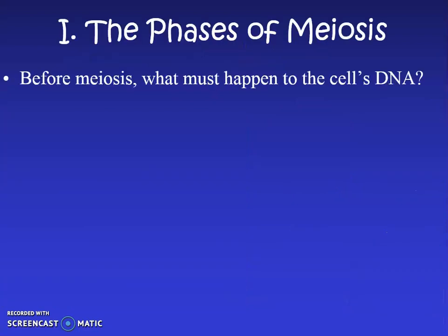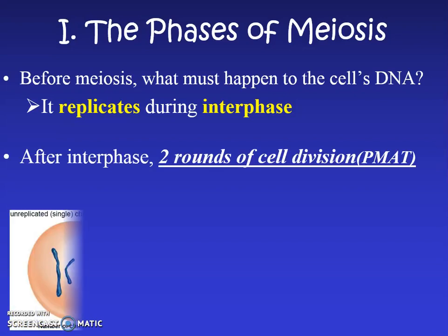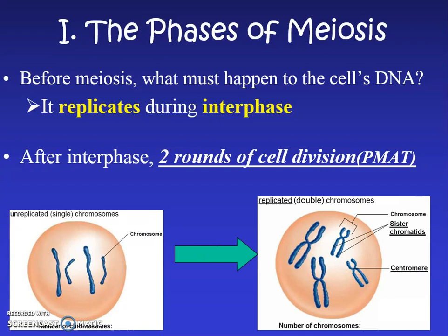When we talk about the phases or stages of meiosis, we first have to think about what needs to happen to the cell's DNA before meiosis begins. Just like for mitosis, it replicates during interphase — the normal life of a cell. The cell that will become an egg cell or sperm cell also has to go through interphase, and the DNA has to replicate.